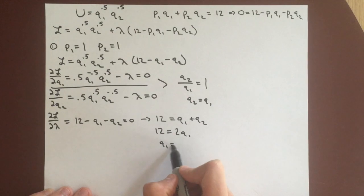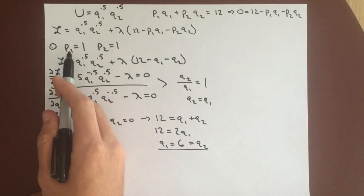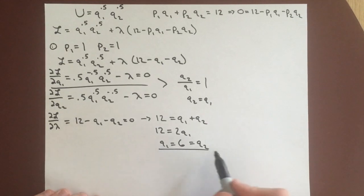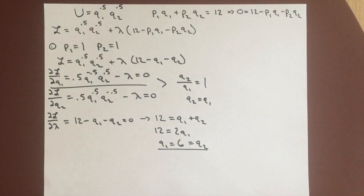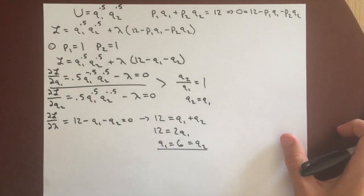And so q2 will also equal 6. So for p1 equals 1 and p2 equals 1, we have 6 for the quantity of good 1 and the quantity of good 2. Now we're going to have to try and change the price of good 1 and see how that affects the quantity.